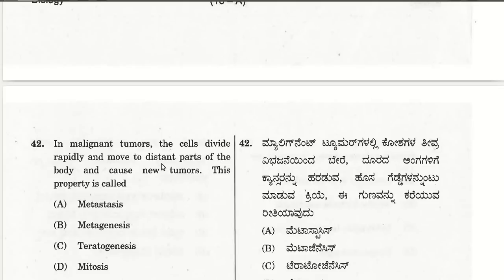In malignant tumors, cells divide rapidly and move to distant parts of the body, causing new tumors. This property is called metastasis. So the property of spreading and forming secondary cancers is called metastasis. Question 42 answer is A.